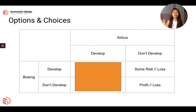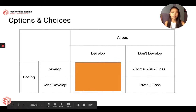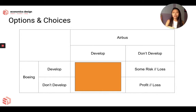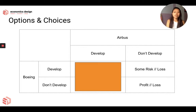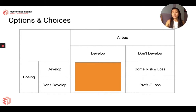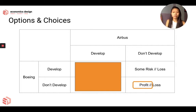What if Airbus decides not to develop? Then Boeing will either have some risk if they develop, or profits if they don't develop. If Airbus doesn't develop and Boeing decides to develop, you've put a lot of money into R&D — if it succeeds, you get a lot of rewards; if it doesn't, you're back to square one with some risk from R&D losses. And if both don't develop, it's status quo — Boeing is the market leader anyway, so they continue to get profits. Boeing will choose not to develop and continue getting profits.